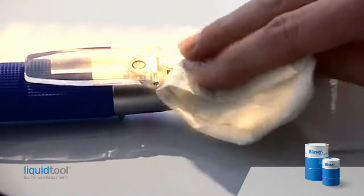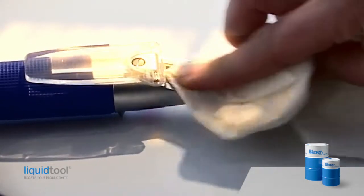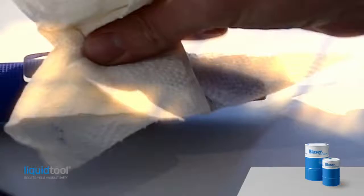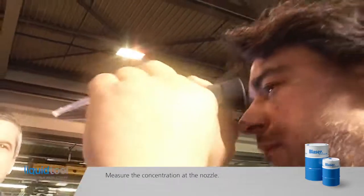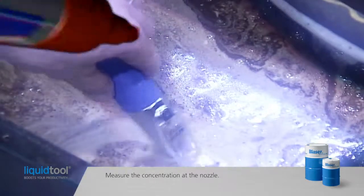After each measurement, clean the refractometer with a soft tissue or Kleenex. Measure the emulsion concentration at the nozzle, not in a surface layer.